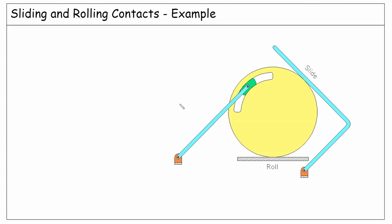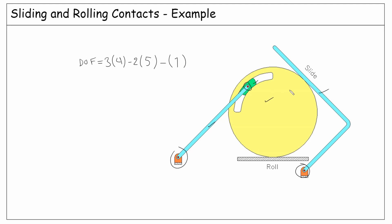In the third system, there is a rolling contact here and a sliding contact here. So the degrees of freedom is 3 times 4 bodies, minus 2 times J1 — we have 3 revolute joints, 1 prismatic joint, and 1 rolling contact, so J1 is 5. Minus J2, which is 1 because of this sliding contact here. And the degrees of freedom is 1.